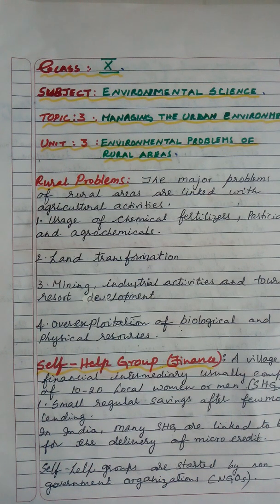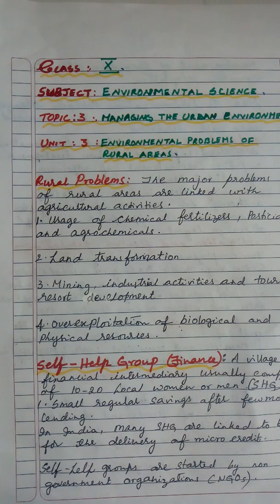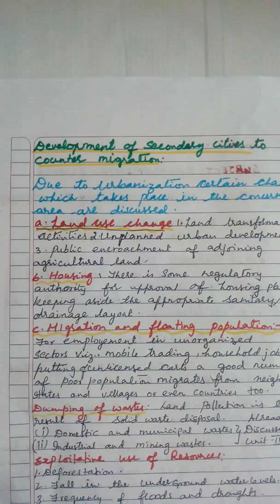Self-help groups are seen as instruments for a variety of goals including empowering women, developing leadership abilities among poor people, increasing school enrollments, and improving nutrition and the use of birth control. Financial intermediation is generally seen more as an entry point to these other goals rather than the primary objective.